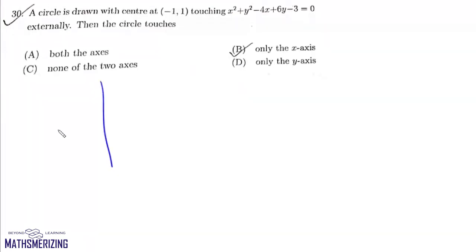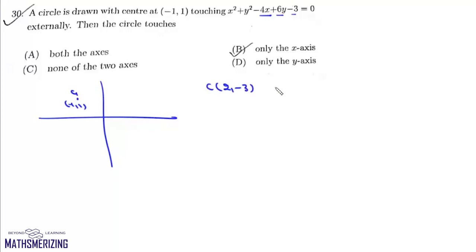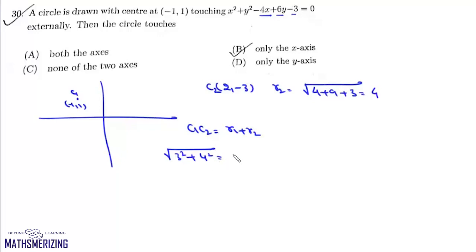Question 30: a circle C1 with center at (minus 1, 1) touches the circle X squared plus Y squared minus 4X plus 6Y minus 3 equals 0 externally. The second circle has center (2, minus 3) and radius under root of 4 plus 9 plus 3 equals 4. The distance between centers is under root of 3 squared plus 4 squared equals 5. Since they touch externally, C1C2 equals R1 plus R2, so 5 equals R1 plus 4, giving R1 equals 1. With center (minus 1, 1) and radius 1, the circle touches both coordinate axes, and that's option A.